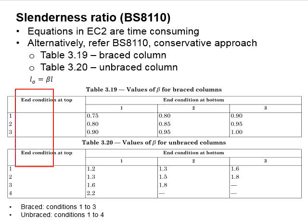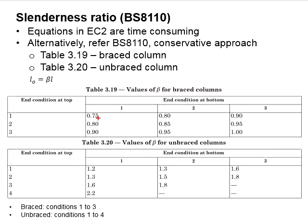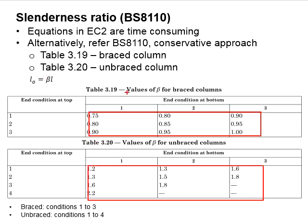These columns represent the conditions at the top, while these columns represent the conditions at the bottom. The numbers within are the values of beta. Beta is a ratio to be multiplied with the height of the column.